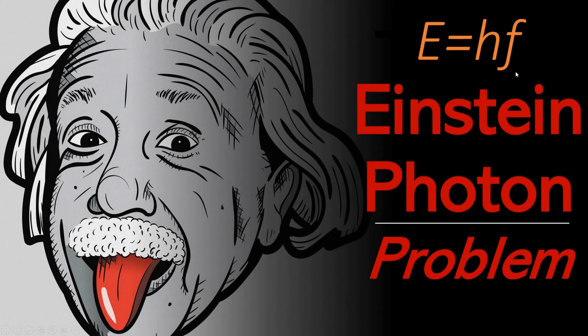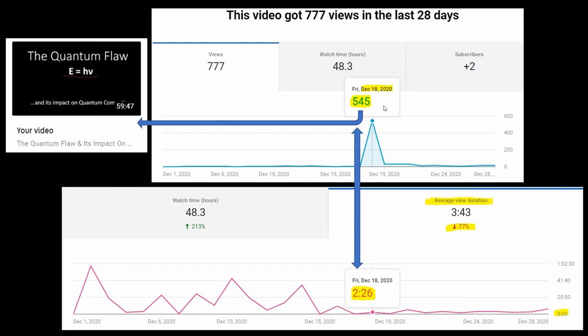Let's take an objective look at the equation that Einstein used to represent a particle of light, or the photon. The reason for this is due to a spike in views for a video I did last year called the quantum flaw.